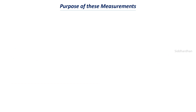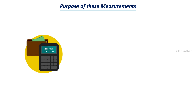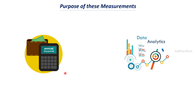So what is the purpose of these measurements? Where are we going to use measurements such as percentiles and quantiles? Let's say that we have a dataset about the annual income of all the people in a city. This is the dataset we have and we need to do some data analysis on it. One important step in data analysis is to find the distribution of data points in a dataset — so we need to find the distribution.